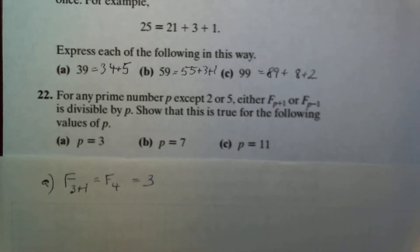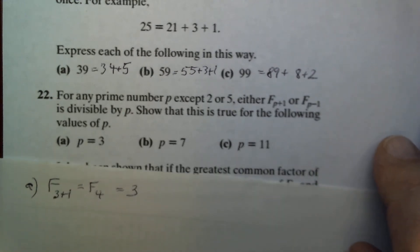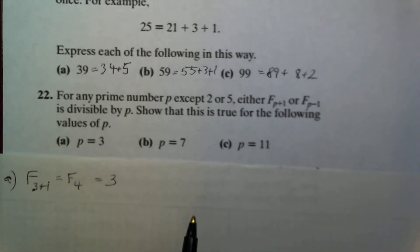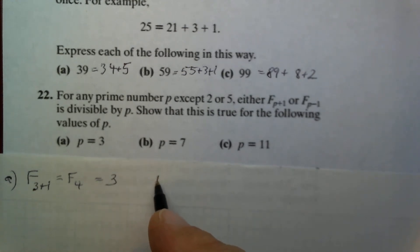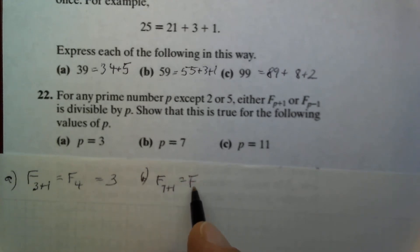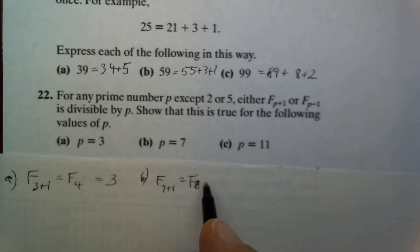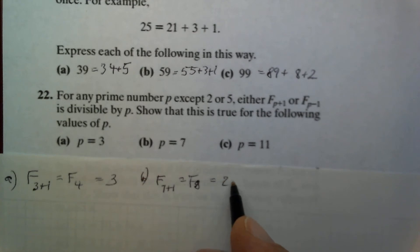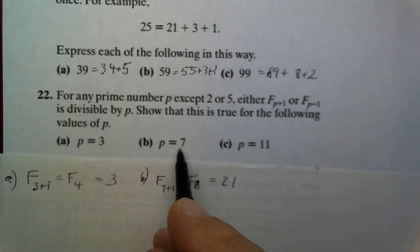For part B, with P equals 7, F sub (P plus 1) will be F sub 8. The eighth Fibonacci number is equal to 21, and 21 is divisible by P equals 7.